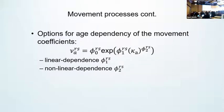The option also exists to allow for age dependency in movement, and this can either be linearly or non-linearly dependent. In the case of the skipjack tuna model, it has had age-specific movement estimation in the past.